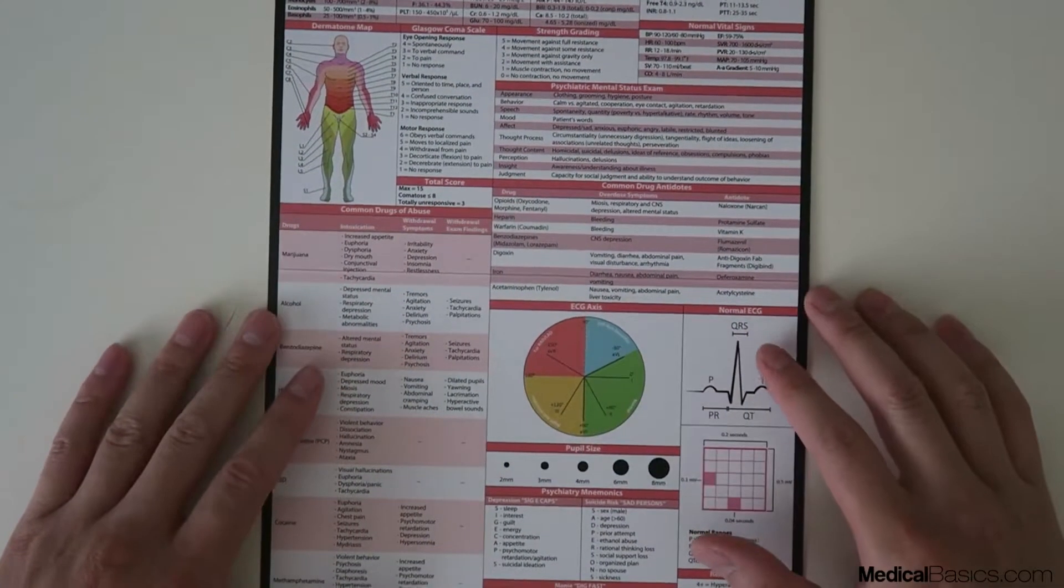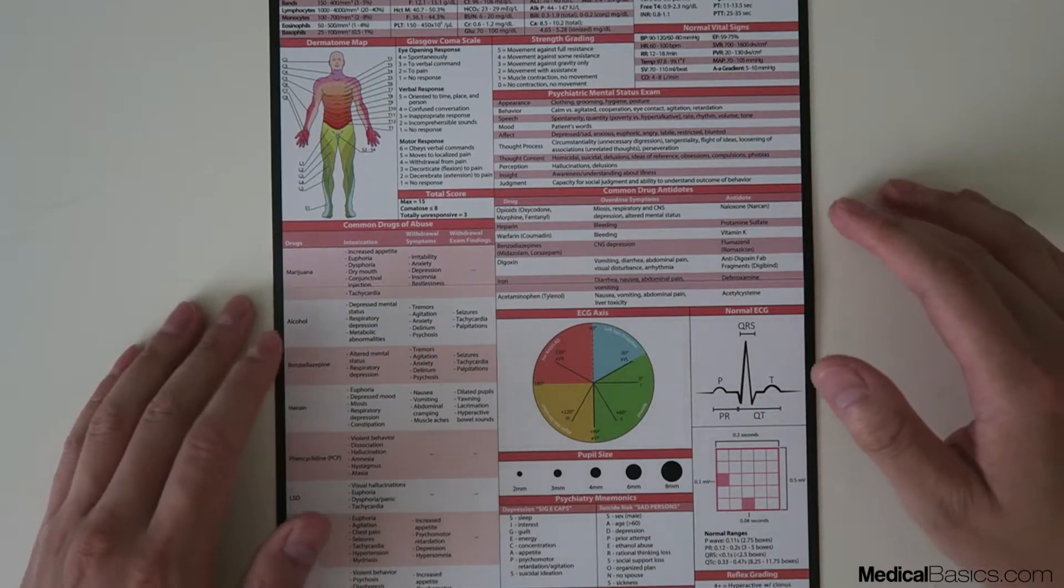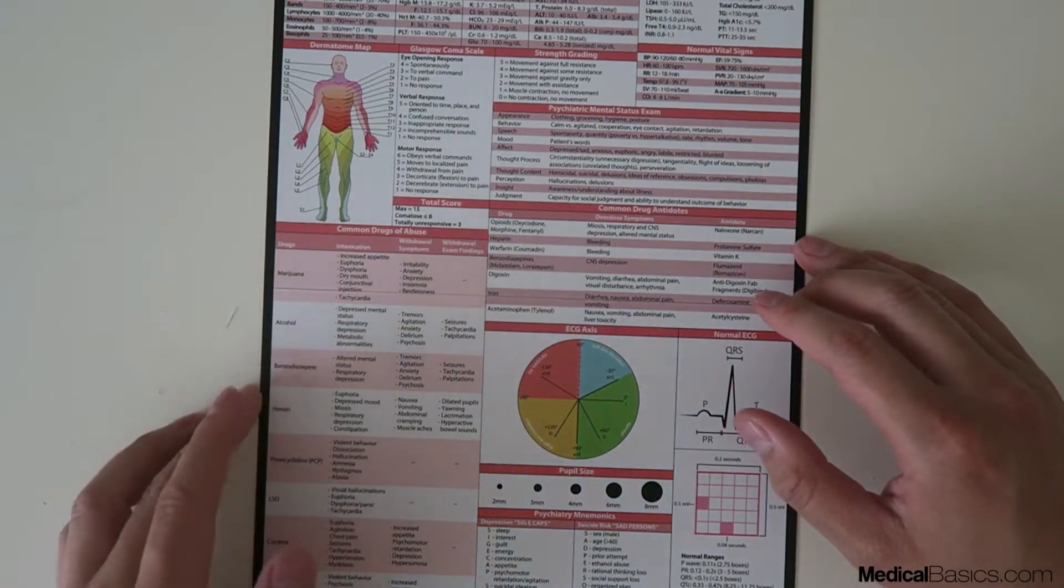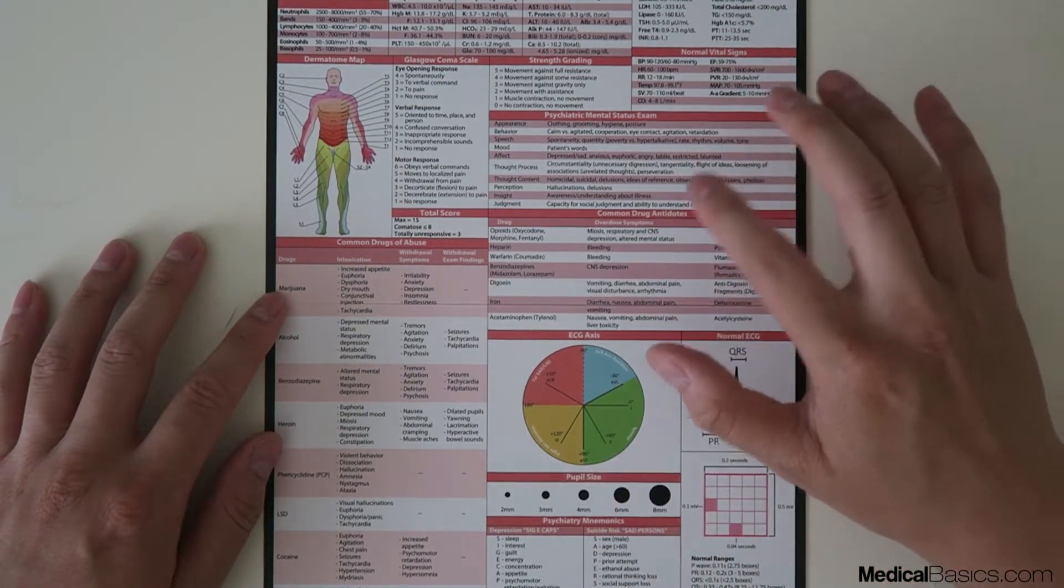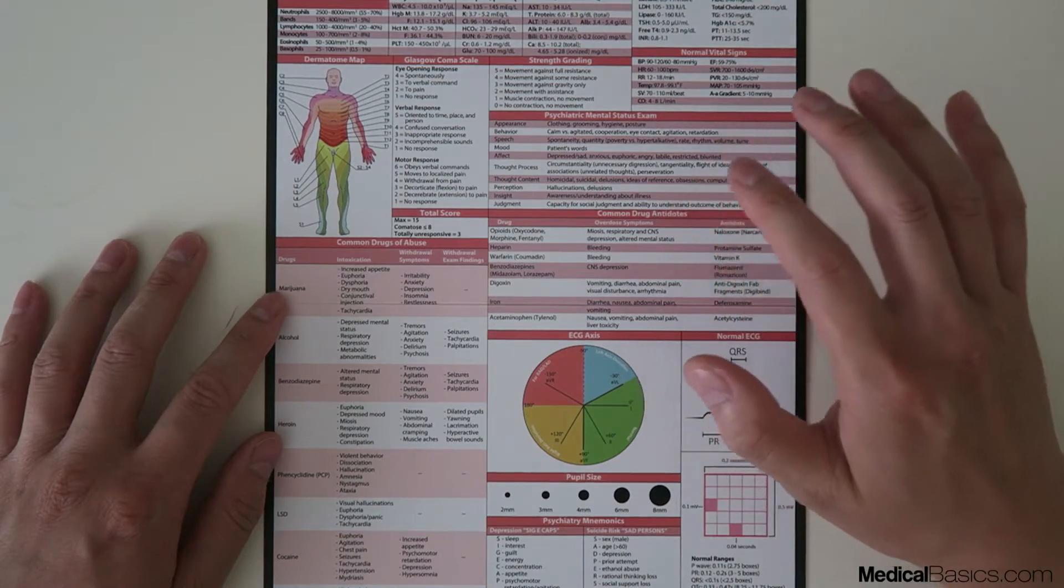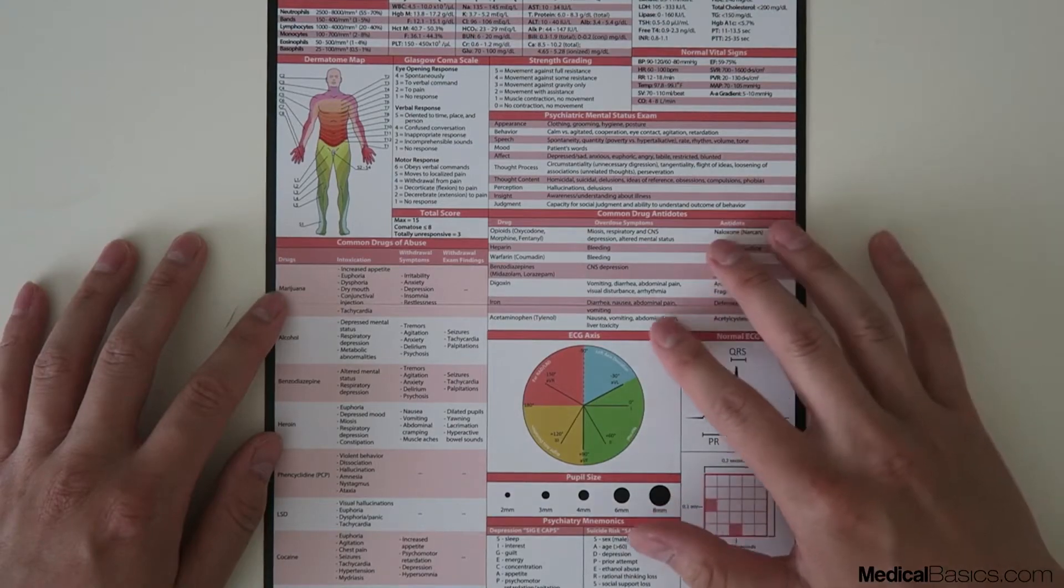With each of these you're going to have a reference sheet, and similar to other notebooks that you may have purchased in the past or have seen, it's going to have some of the same things but a lot more things that are catered towards psychiatry. You're going to have a psychiatric mental status exam that's more detailed than what we'll have in the actual notebook itself.